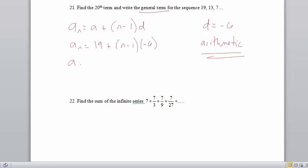Once we have that, we can find the twentieth term pretty easily. Nineteen plus twenty minus one is nineteen times negative six. And all I have to do now is figure out what nineteen minus nineteen times six is. So nineteen times six is one hundred fourteen. So the calculator would be helpful here. So nineteen minus one fourteen should give us a value of negative ninety-five. That is the twentieth term.